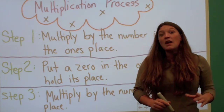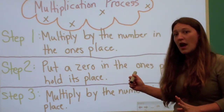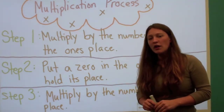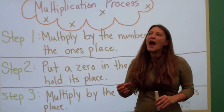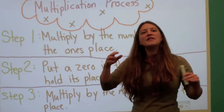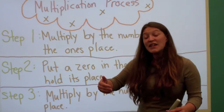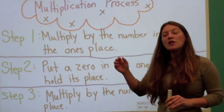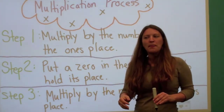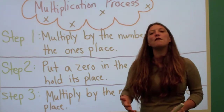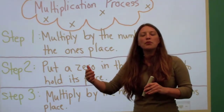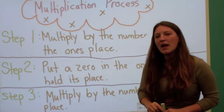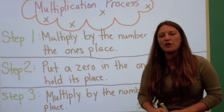Before you write this down, I want you to take a minute and in the global section of your notebook, write an example of how we have to follow steps somewhere else in the world. Today we're going to be following a certain process to multiply by a two-digit number — where else in the world do we have to follow a certain process, doing the first thing first, then the next, and so on? Pause the video to write that down in the global section.